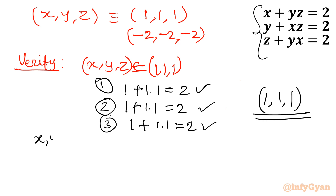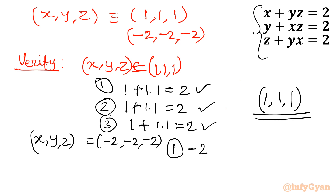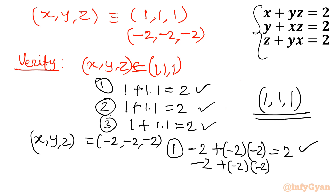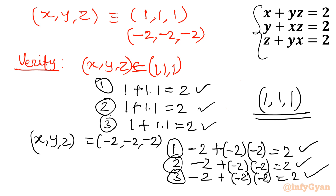For the second solution set (negative 2, negative 2, negative 2): equation 1 gives negative 2 plus negative 2 times negative 2, which is negative 2 plus 4 equal to 2 — correct. Similarly equations 2 and 3 each give negative 2 plus 4 equal to 2 — correct. Verification done.